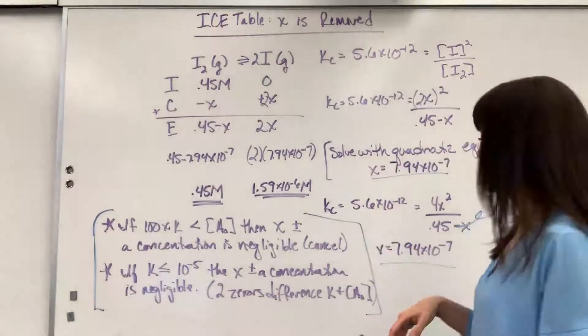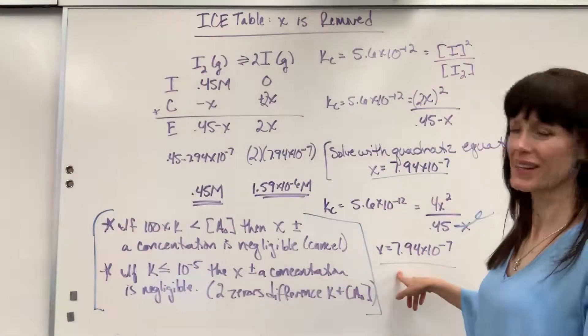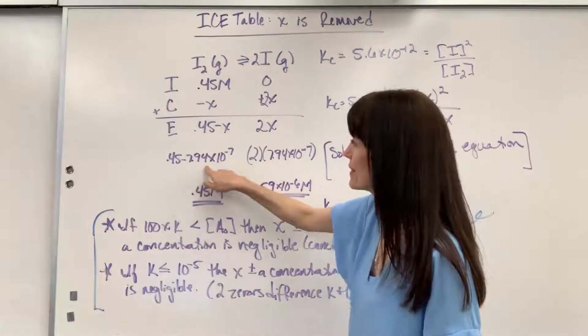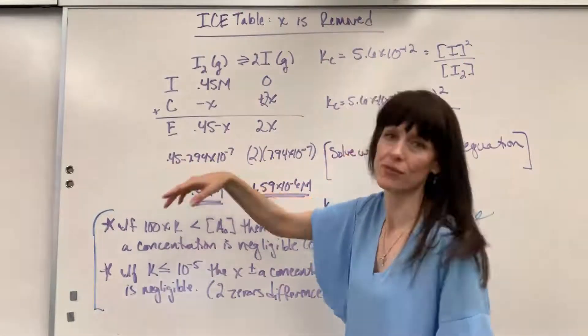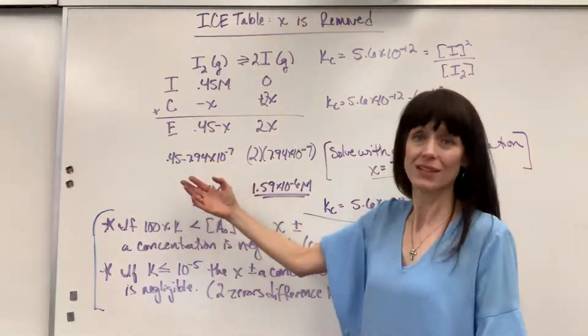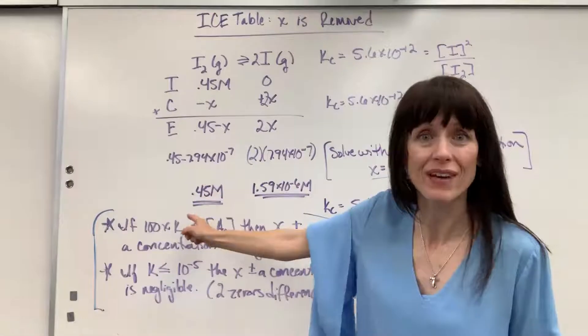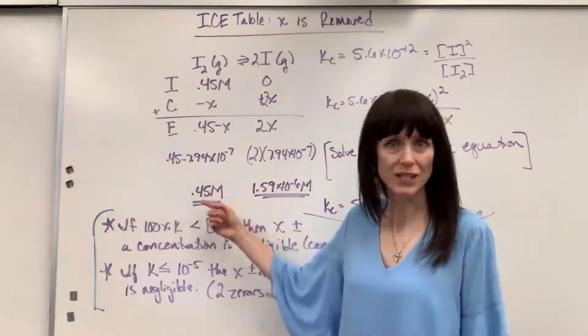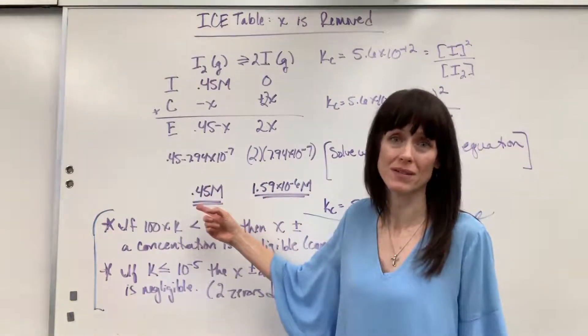So I took my x, 7.9 times 10 to the minus 7. Went ahead and plugged it in. So I plug this in and like I said, it was 0.44999, whatever. Round it, two sig figs, it's still 0.45. You subtract that tiny amount as if it doesn't even change the concentration because it's so small in comparison.